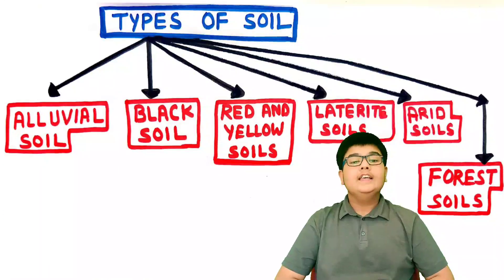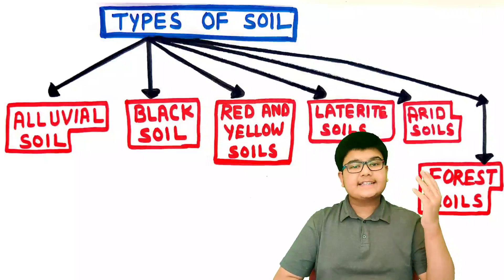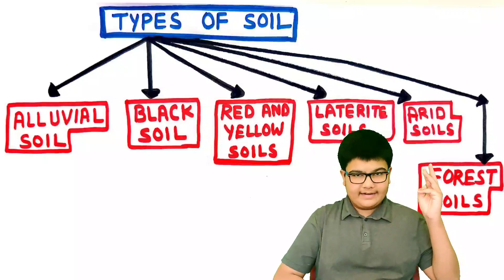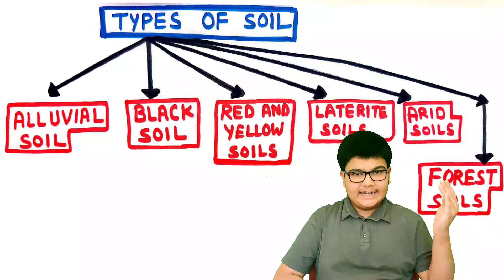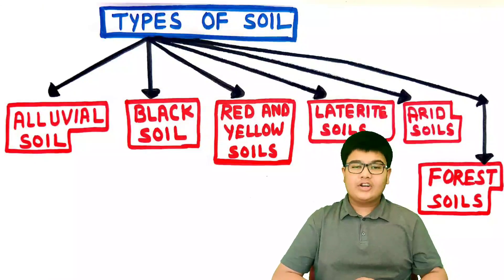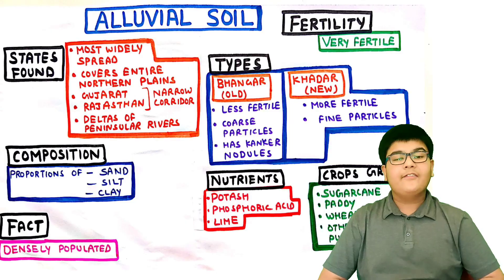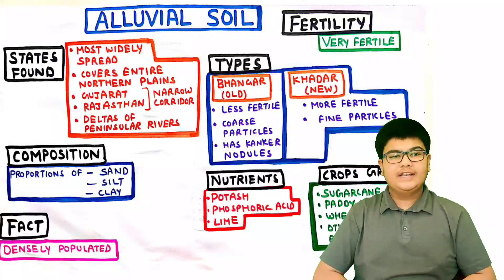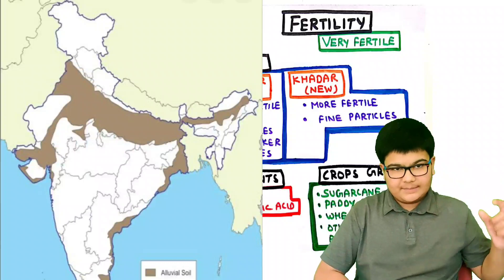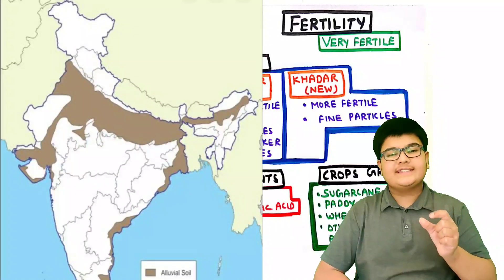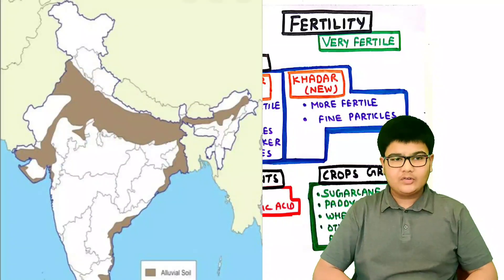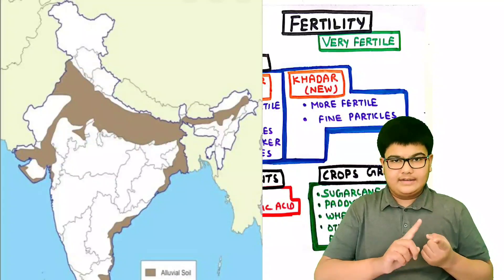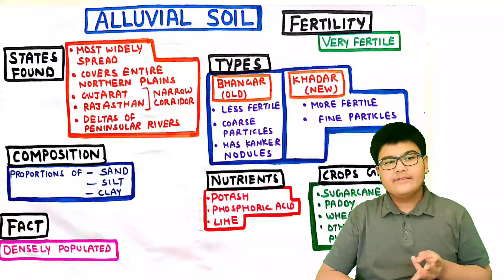In India, there are six kinds of soils: alluvial soil, black soil, red and yellow soils, laterite soils, arid soils, and forest soils. Alluvial soil is the most widely spread soil in India and it covers the entire northern plains. It also extends into Gujarat and Rajasthan through a narrow corridor, and is also present in the deltas of the peninsular rivers such as Mahanadi, Krishna, Godavari, and Kaveri.